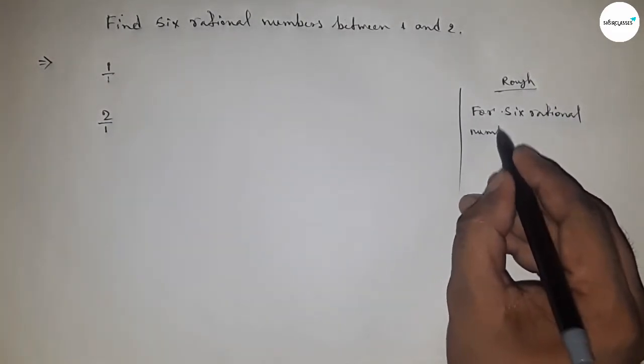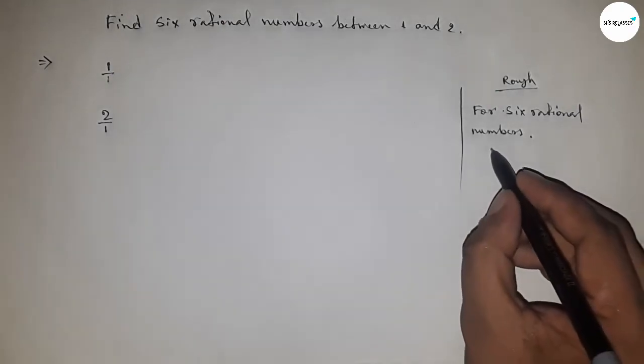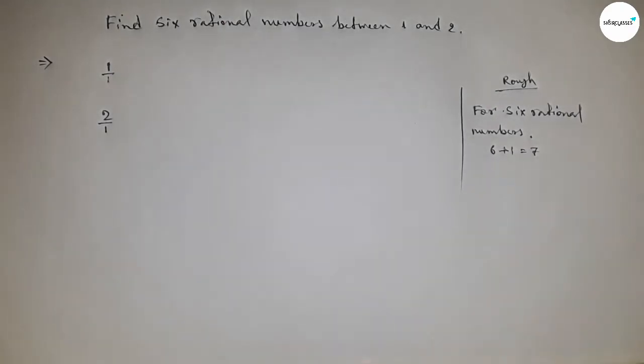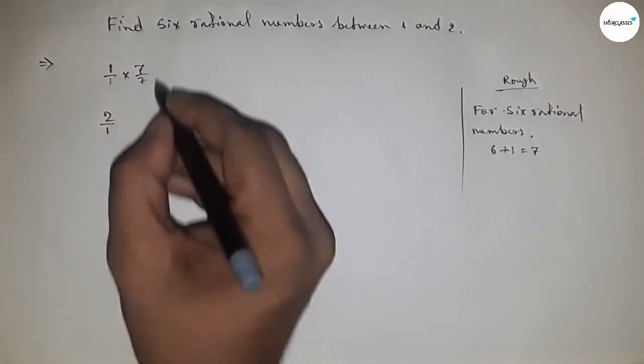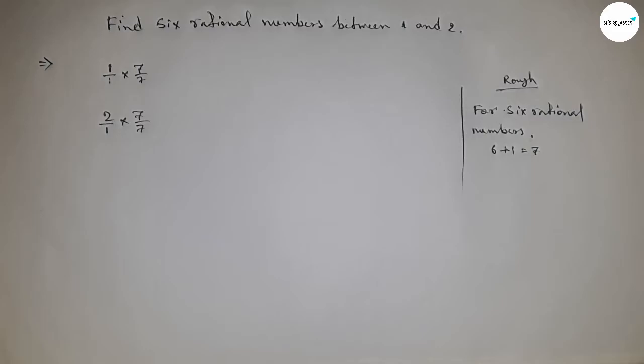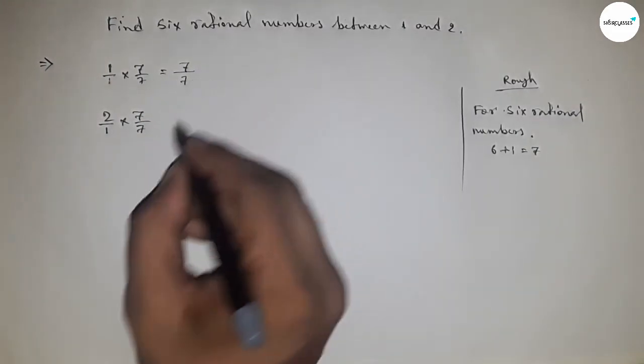We multiply the given two rational numbers by six plus one, which equals seven. So we have to multiply this up and down - seven by seven and here seven by seven. This is equal to seven by seven.